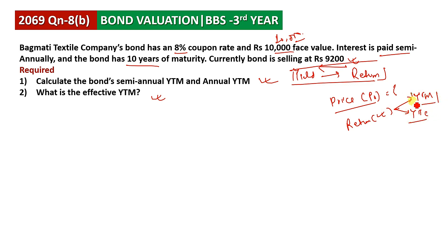We need to know that YTM is the yield to maturity — the return earned if the bond is held until it matures. The maturity period is fixed, and at the end we need to find how much return can be earned in this case.